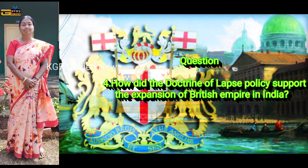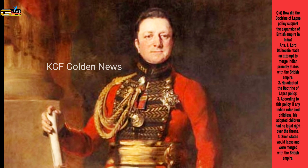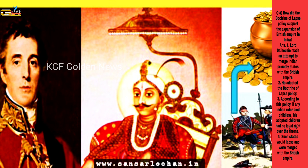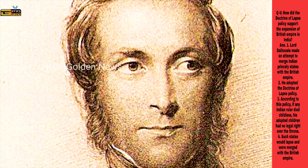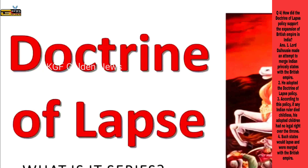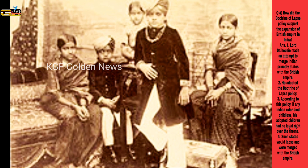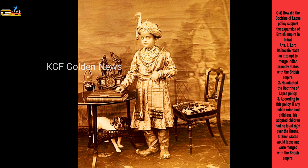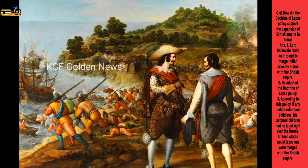Question No. 4: How did the Doctrine of Lapse policy support the expansion of the British Empire in India? Point 1 — Lord Dalhousie made an attempt to merge Indian princely states with the British Empire. Point 2 — He adopted the Doctrine of Lapse policy. Point 3 — According to this policy, if any Indian ruler died childless, his adopted children had no legal right over the throne. Point 4 — Such states would lapse and were merged with the British Empire.